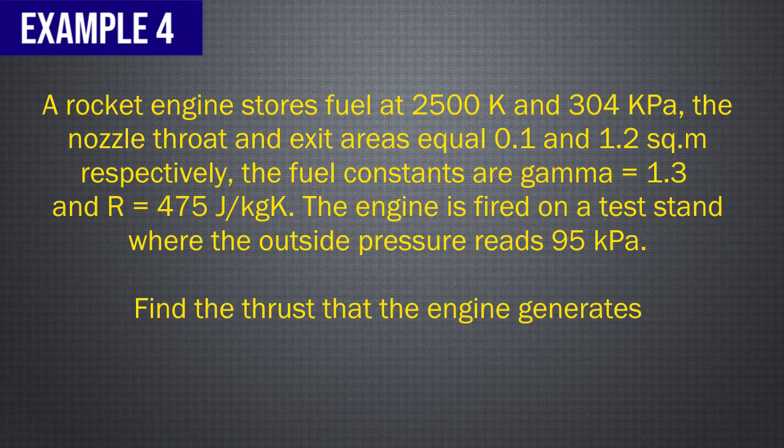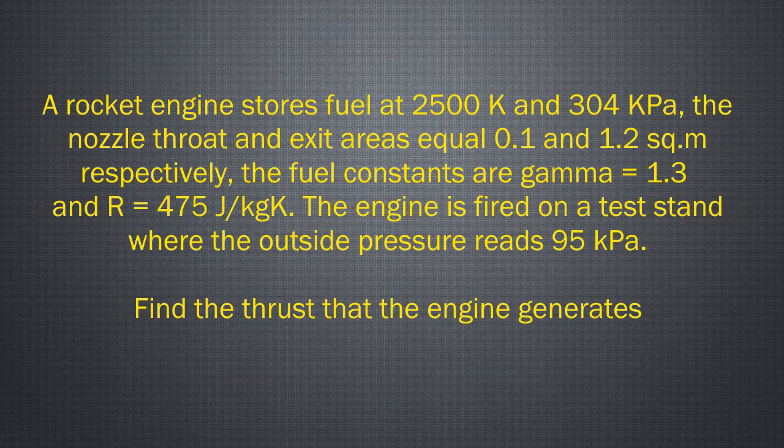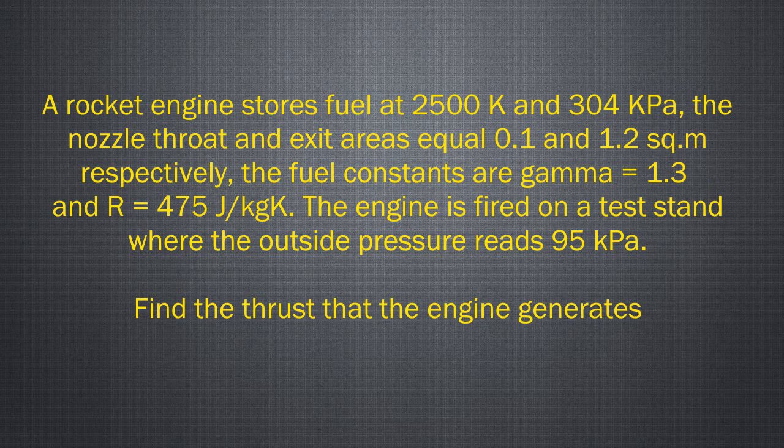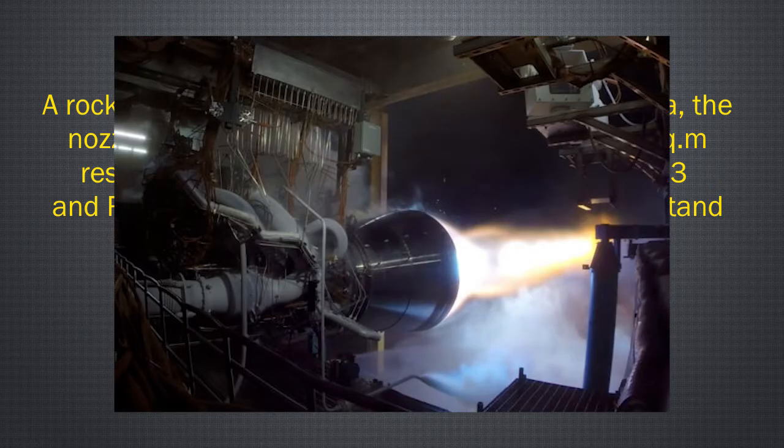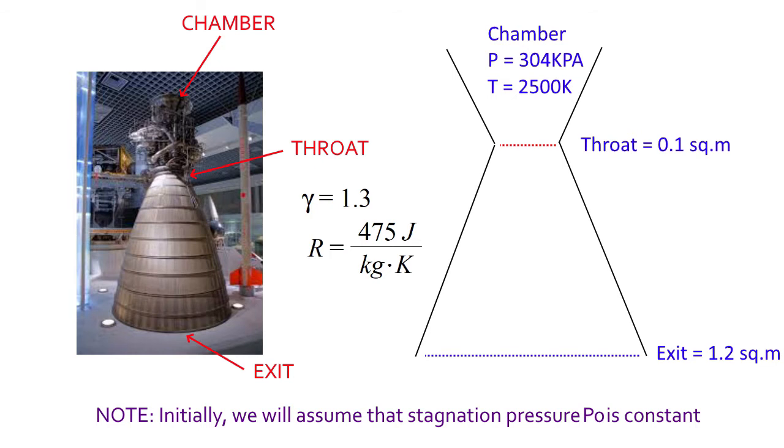A rocket engine stores fuel at 2500 Kelvin and 304 kilopascals. The nozzle throat and the exit areas equal 0.1 and 1.2 square meters respectively. The fuel constants are gamma equals 1.3 and R equals 475 joules per kilogram Kelvin. The engine is fired on a test stand where the outside pressure reads 95 kilopascals. Find the thrust that the engine generates. For this question we have a rocket nozzle. Let's make a diagram and put all the constants in there. We have chamber pressure, temperature, the areas, gamma and we have R.